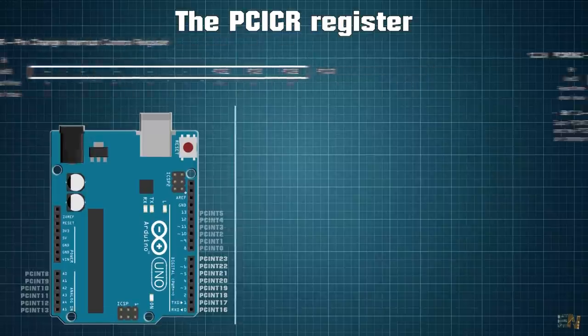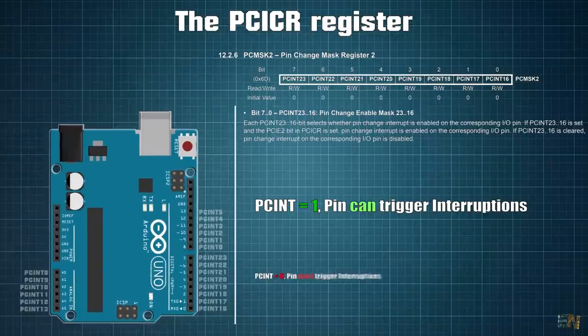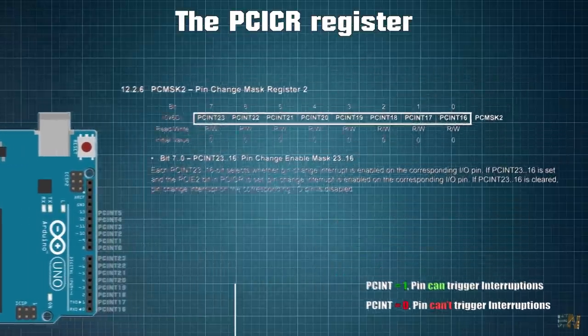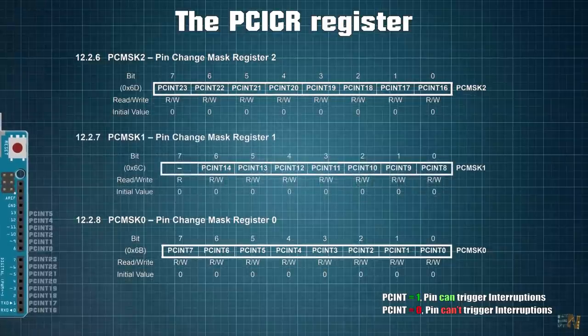Now setting a PCINT bit to a 1, it means that that pin will trigger interruptions on the pin change. The PCINT bits are controlled by the PCMSK register, precisely by the PCMSK register 0, 1 and 2.